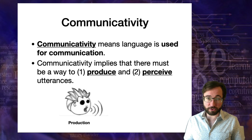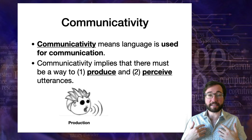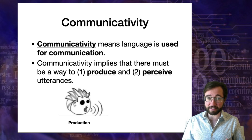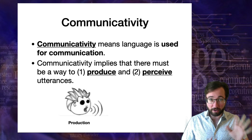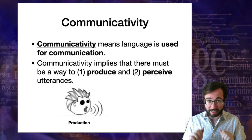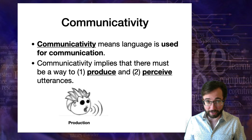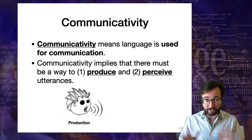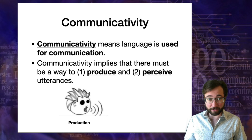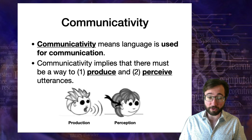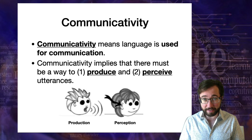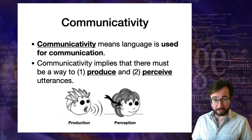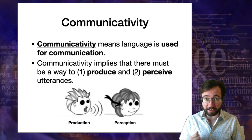Production refers to the processes by which we create the physically observable signal — things like moving your mouth to talk, moving your hands to produce a sign language, or typing or handwriting to produce written language. That other person will then perceive the signal by seeing, feeling, or hearing it using their senses. Communicativity means you have to have both of these functions.